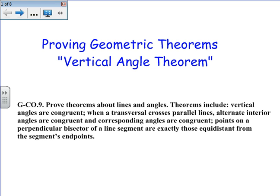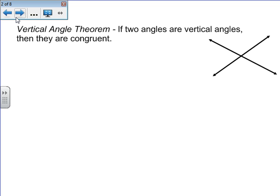Okay, so our theorem is the Vertical Angle Theorem, which says: if two angles are vertical angles, then they are congruent. As we look at this, angles one and two are considered vertical angles. In proving this, we're also going to look at angle three.